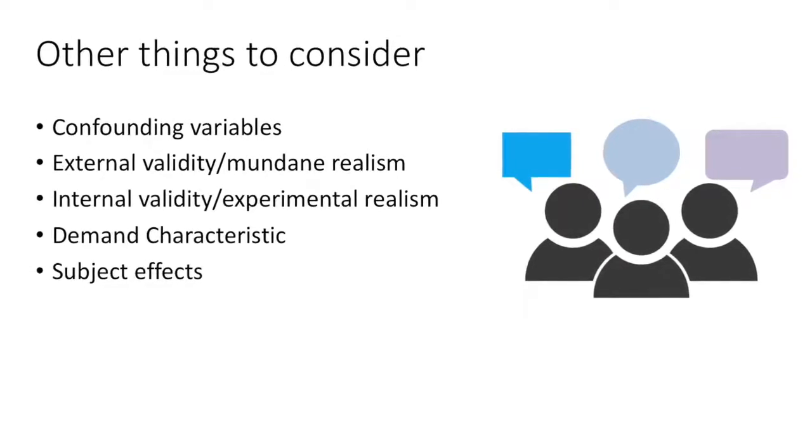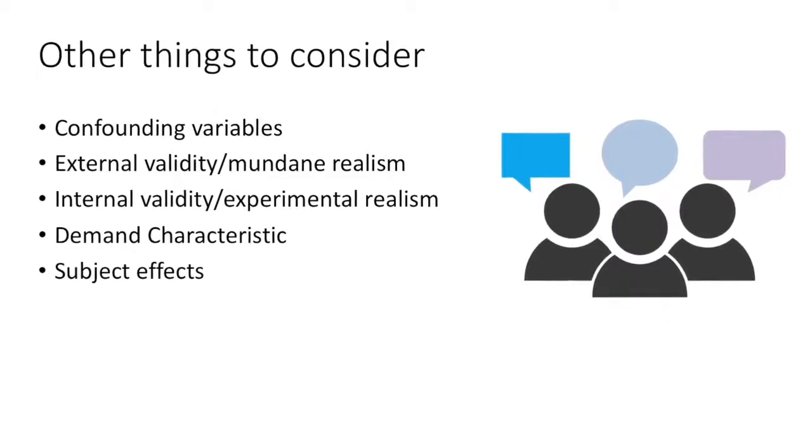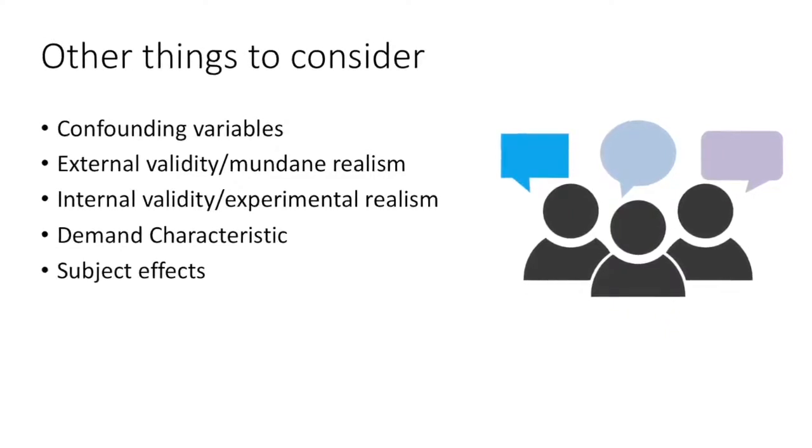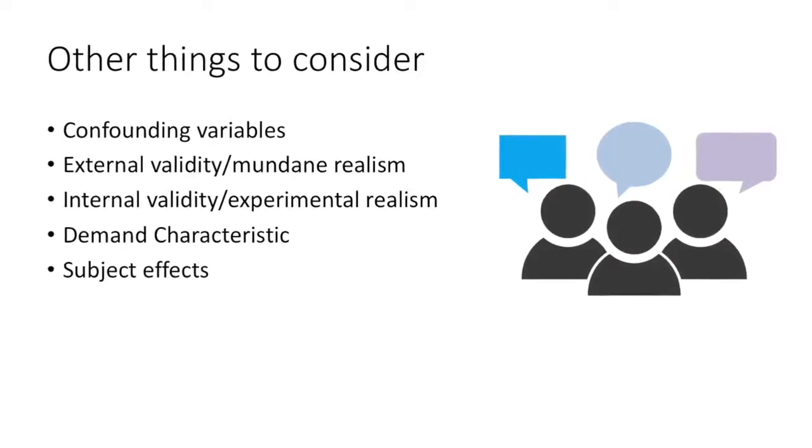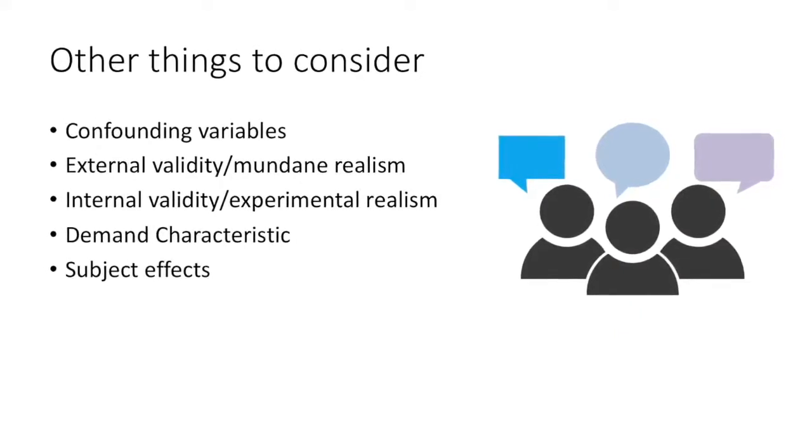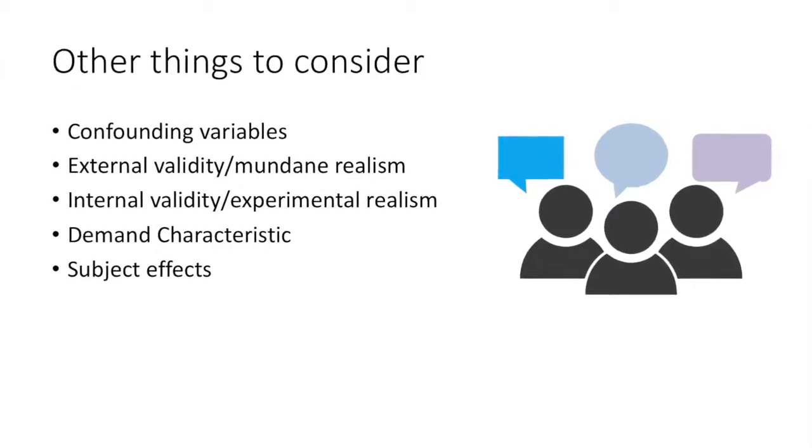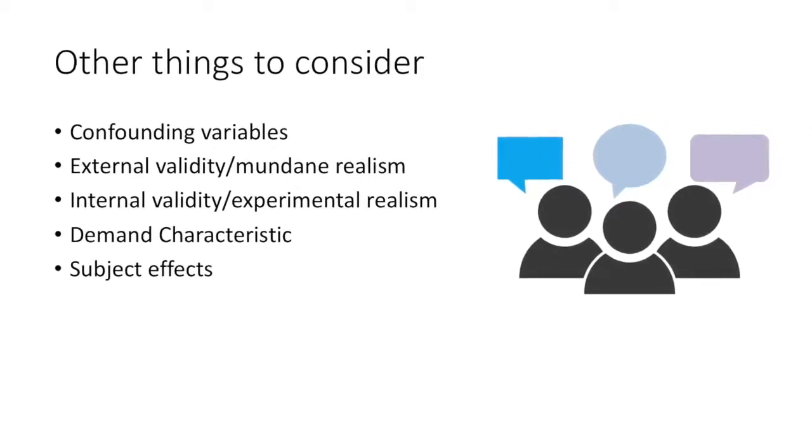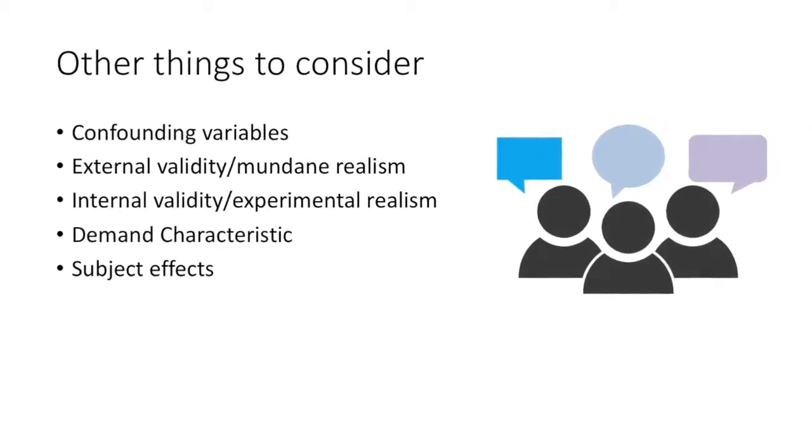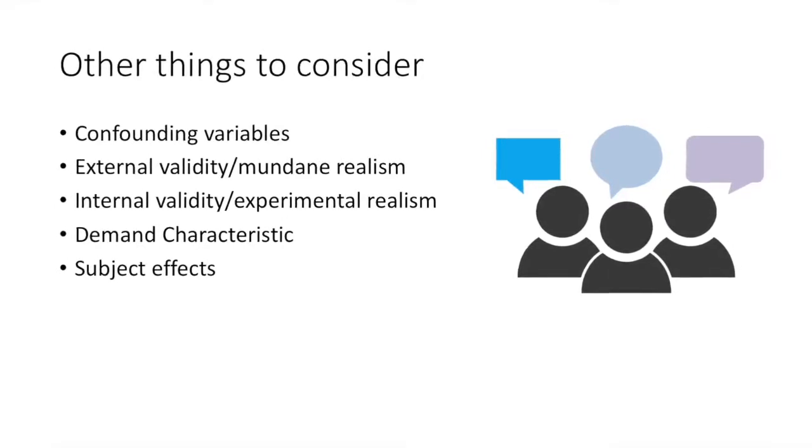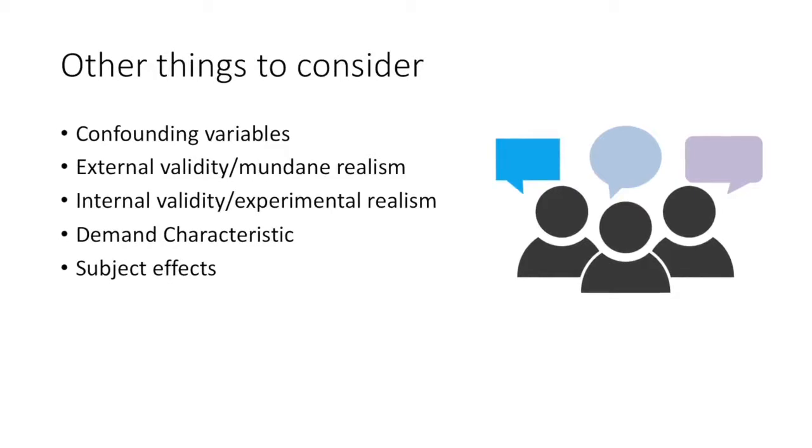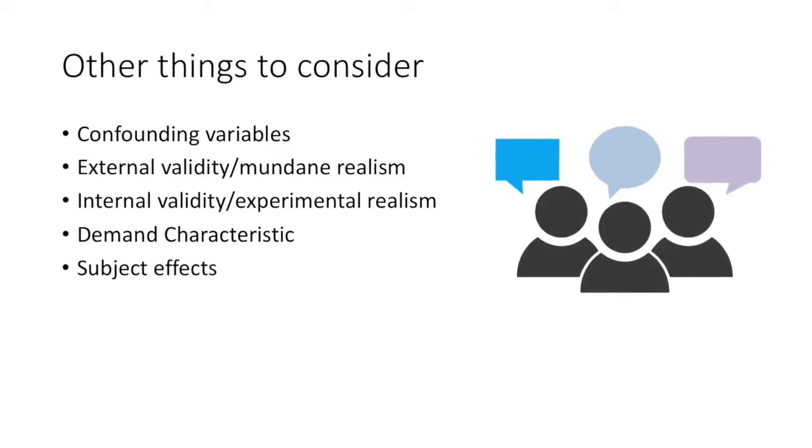You also have to consider internal validity or experimental realism, which includes the psychological impact of manipulation in an experiment. We also have demand characteristics where the experiment's features seem to demand certain responses. There are also subject effects, which are non-spontaneous effects that owe to the demand characteristic, or for example, a participant wishing to please the experimenter.